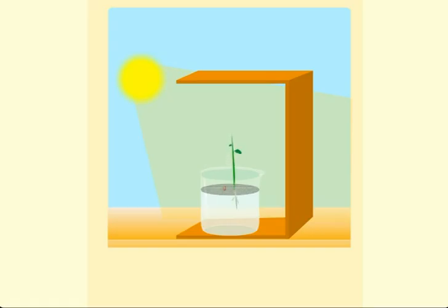After three or four days, you will notice that the shoots of the plant start bending towards light, whereas its roots bend away from light.